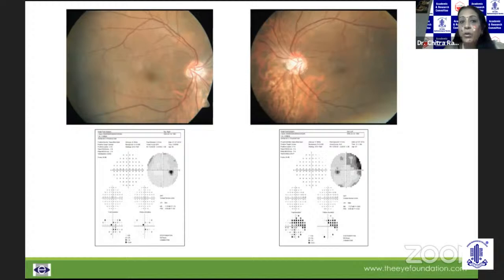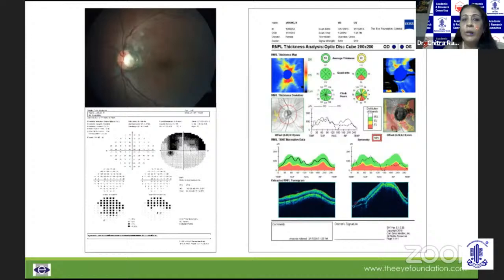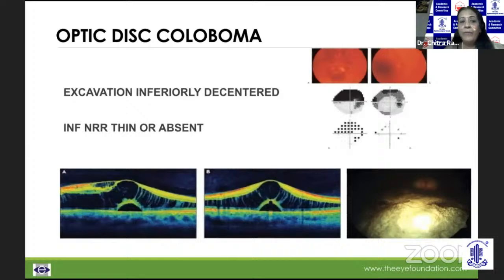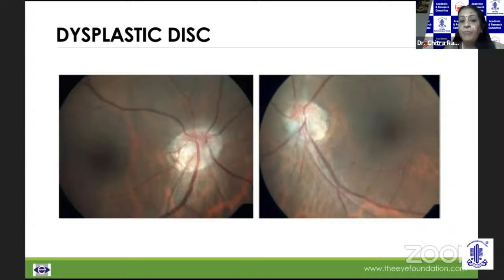An optic pit should not be confused with an acquired pit of the optic nerve, which tends to be more on the poles. An optic pit would have a characteristic superior field effect and may have a macular fluid collection. An optic disc coloboma would have an inferior neuroretinal rim that is thin or absent and should not be viewed as a glaucomatous disc. A dysplastic disc cannot be picked up on OCT, but if the fields do not progress and intraocular pressures remain normal, you can label it as a dysplastic disc.